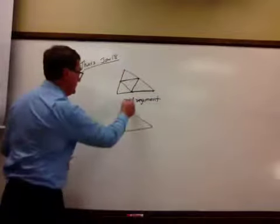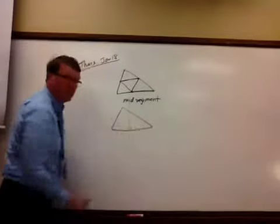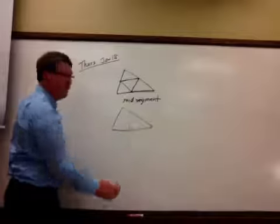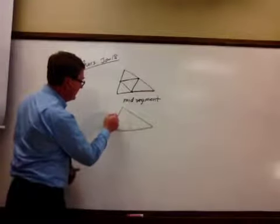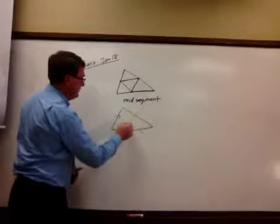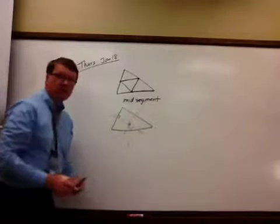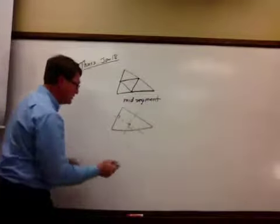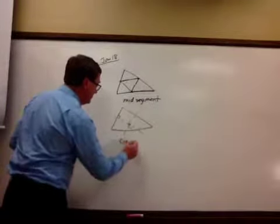If you take the perpendicular bisectors, take the side, cut it in half, make it 90 degrees there. Take it in half, make it 90 degrees. Take it in half, 90 degrees. You get what's called the circumcenter, which is where the circle would go around it.